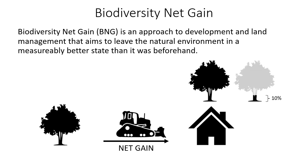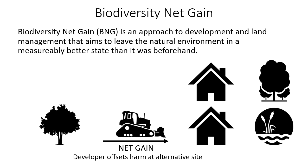Biodiversity net gain acknowledges that no net loss is no longer really a viable alternative, partly because it wasn't stemming losses at larger scale, but also because our policies now regard it as critical that we forge a path towards nature recovery. This net gain can be achieved either through a larger offset or through an increase in habitat condition, and it can be achieved within the footprint of that development or through off-site developments in the creation of new habitats elsewhere.